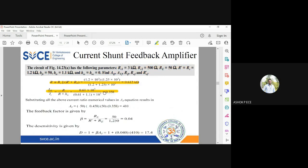Now substitute everything in the expression for ai: minus 50 times minus 0.458 times 50 times 0.358 equals 410. You can see the current is amplified by a factor of 410 without feedback.